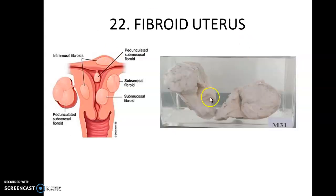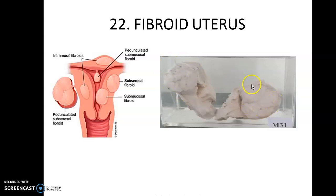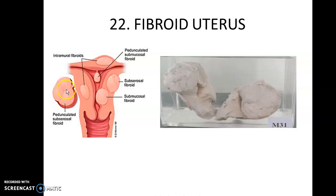The next and most common specimen kept in any exam is a fibroid uterus. On gross, fibroid uteruses tend to have a white whorled appearance. They are circumscribed lesions. Depending on the location, they can be submucosal if just beneath the endometrium, subserosal if just beneath the serosa, or intramural if they are within the wall. This is a pedunculated fibroid arising with a peduncle.